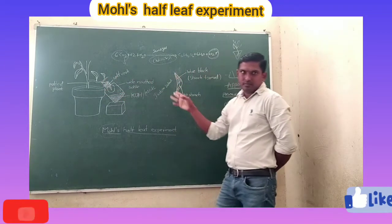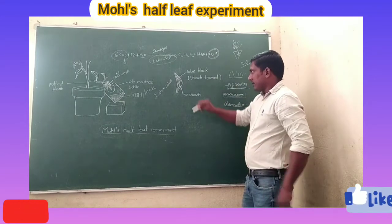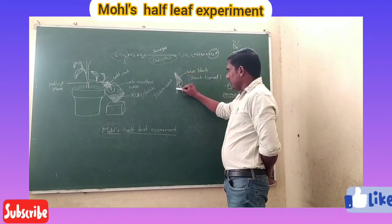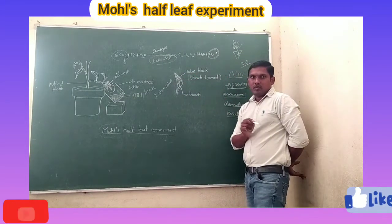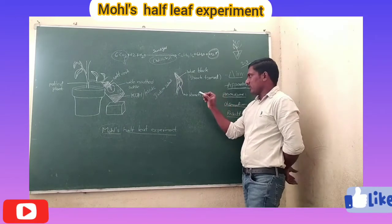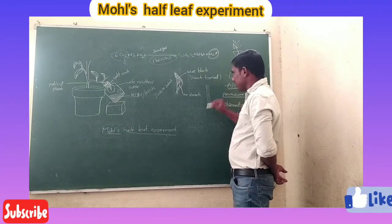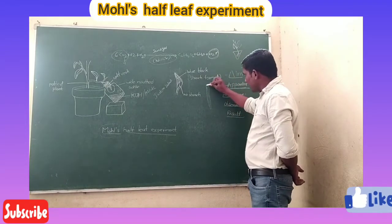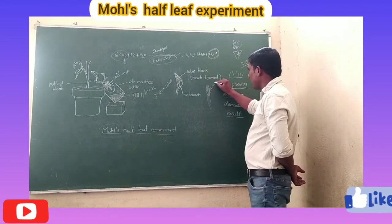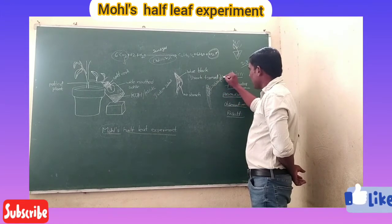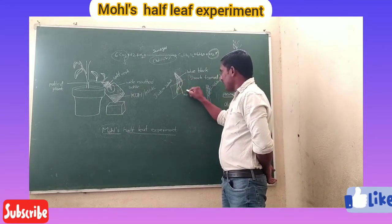After sunlight exposure, we take the leaf out from the bottle and perform the iodine test. The half of the leaf that was exposed to sunlight — outside the bottle — changes color to blue or black. The part of the leaf that was inside the bottle, where there was no carbon dioxide, does not change color.